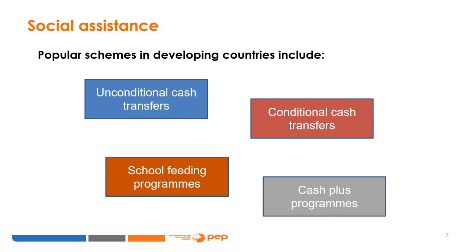Cash plus programs offer complementary services in addition to the cash transfer. This can include in-kind benefits such as nutritional supplements, provision of information or sensitization through behavioral change communications, or psychosocial support such as through social workers that are part of the cash transfer program. The rationale for the cash plus program is based on the notion that income alone is not enough to achieve positive change.